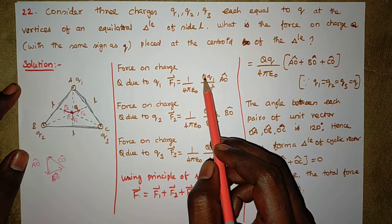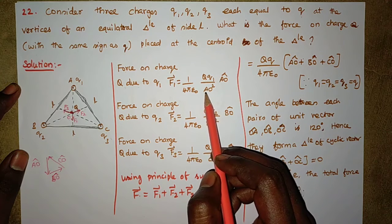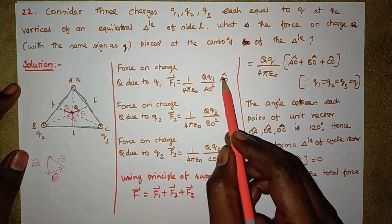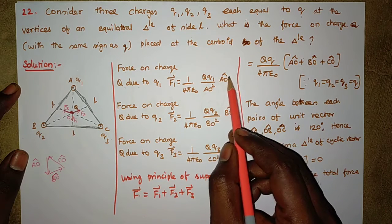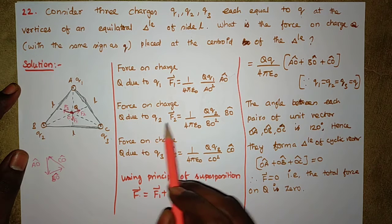F1 is equal to 1 divided by 4π epsilon not times Q times q1 divided by distance OA squared times OA cap. This is the vector force of charge Q due to q1.